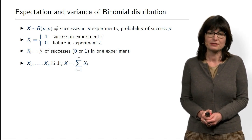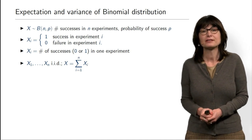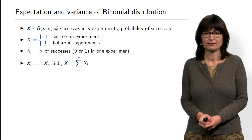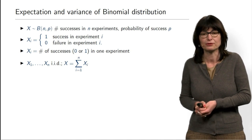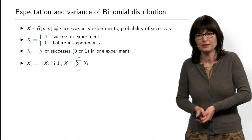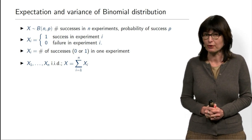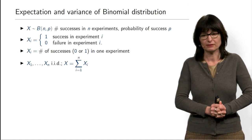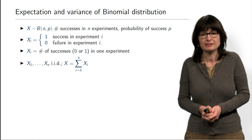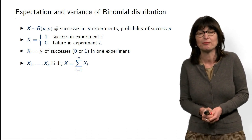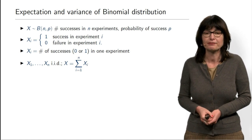Most importantly, the total number of successes in N experiments is nothing else but the sum of the number of successes in each experiment separately. This is very natural: if experiments 1, 2, 3 were successful and experiments 4 through 10 were failures, then the total is 1+1+1 plus seven zeros, which equals 3. So X is the sum of X1 through XN. If an experiment was successful, Xi contributes 1 to the sum; if it was a failure, Xi contributes 0.